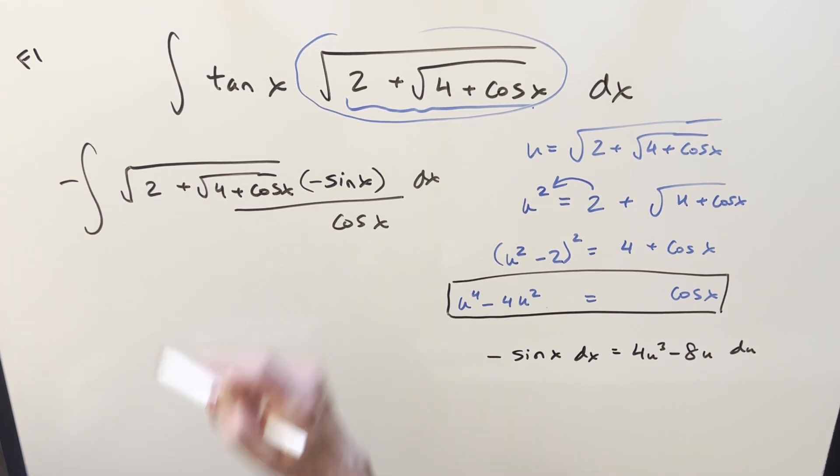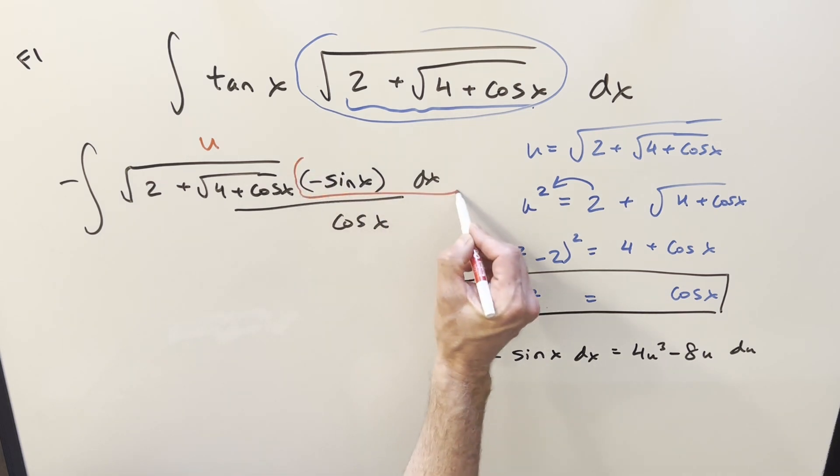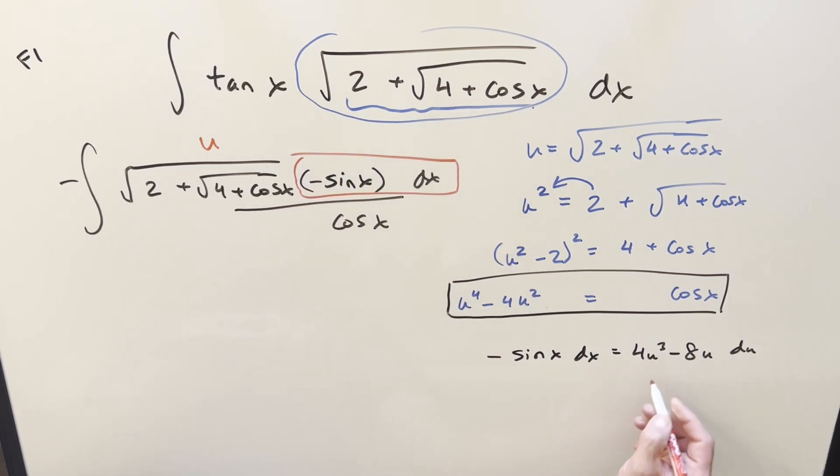So let's just review what we have. The square root again, this is going to be u. Everything over here, this is going to be this stuff. And for cosine x, we have an expression right here to use.